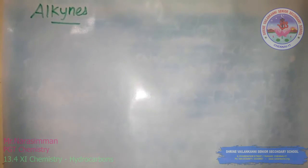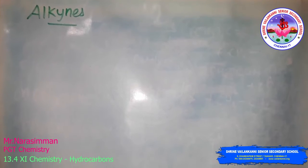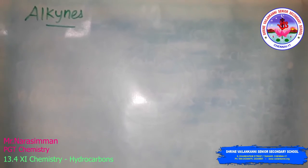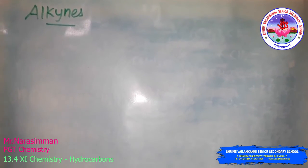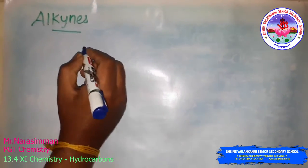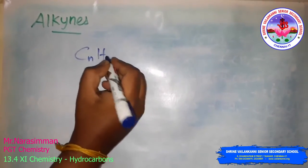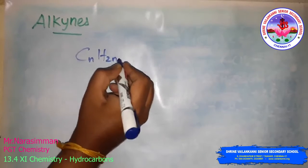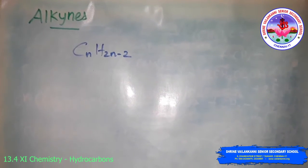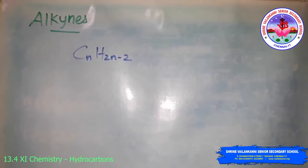Next is alkynes. The alkyne is also an unsaturated compound and the general formula here is CnH2n-2. This is the general formula for alkyne.